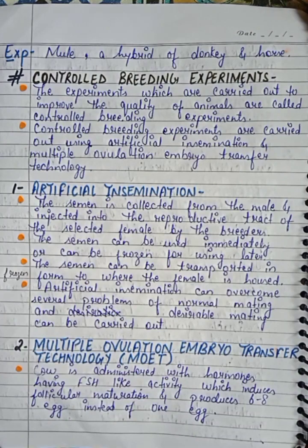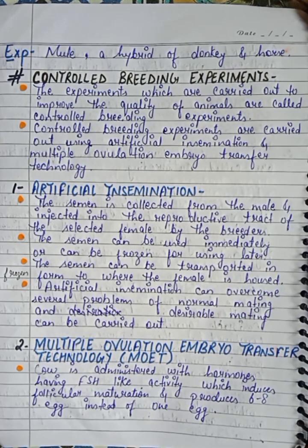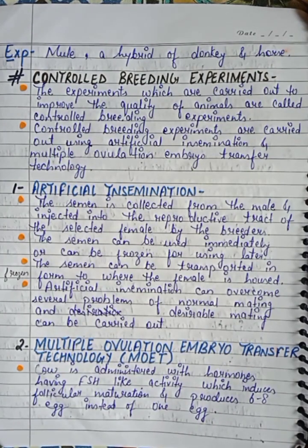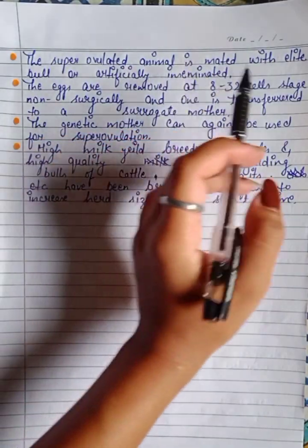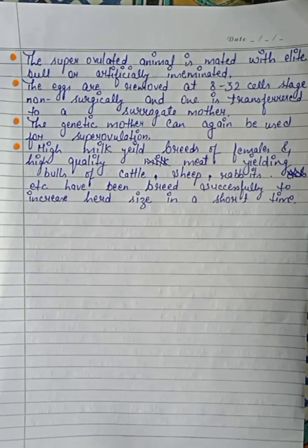Second is Multiple Ovulation Embryo Transfer Technology, called MOET. The cow is administered with hormones having FSH-like activity, which induces follicular maturation and causes super ovulation, producing 6 to 8 eggs instead of one. The super-ovulated animal is then mated with an elite or superior bull, or artificially inseminated.